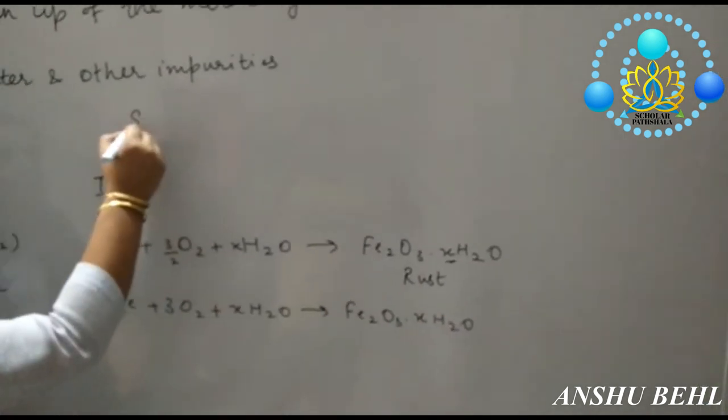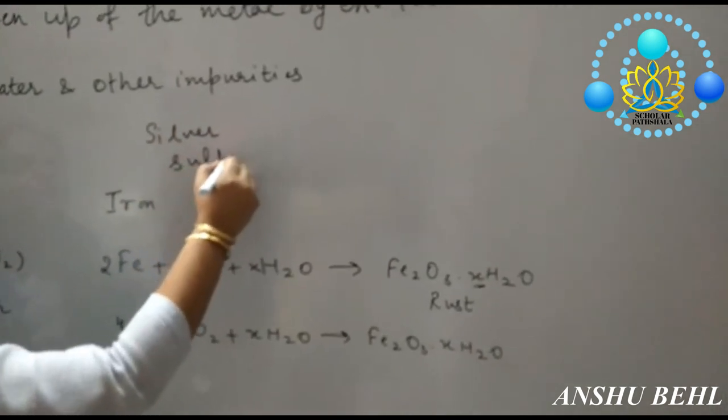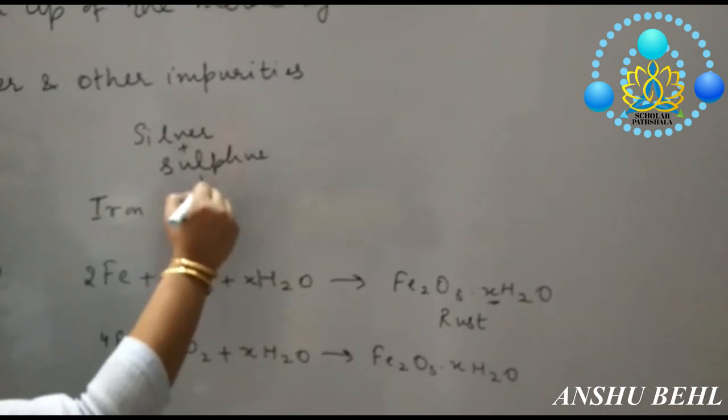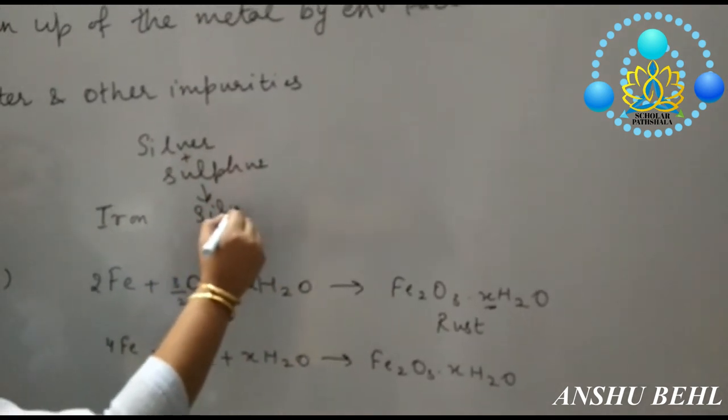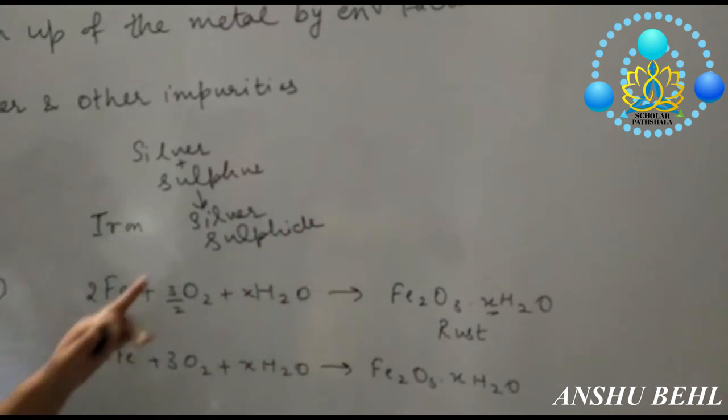In case of silver, sulfur is combining with silver to form silver sulfide. Silver articles get black.